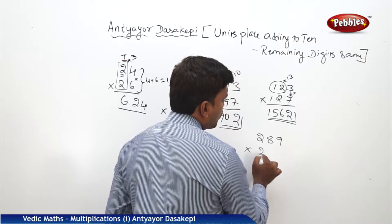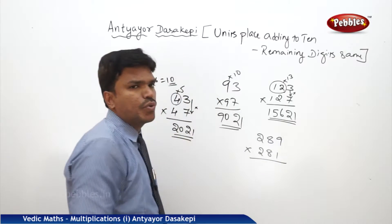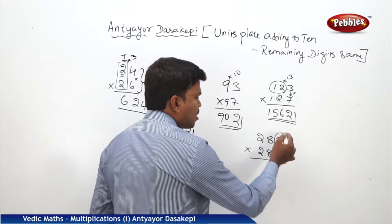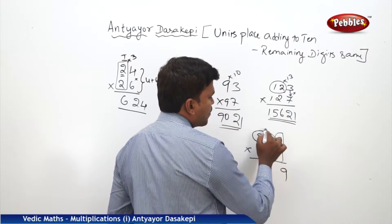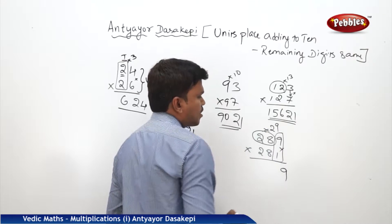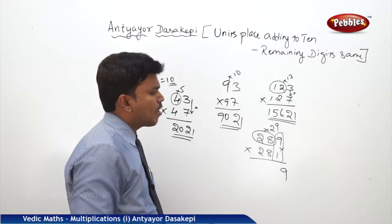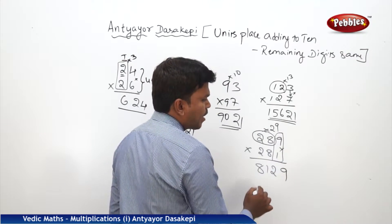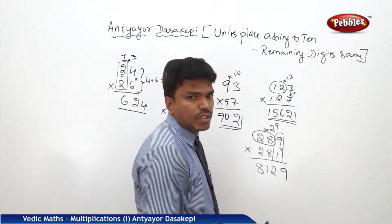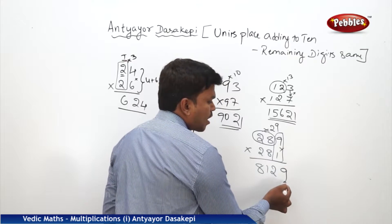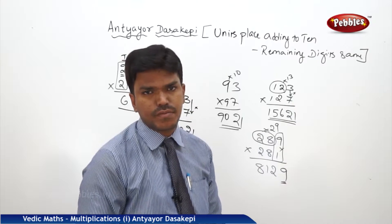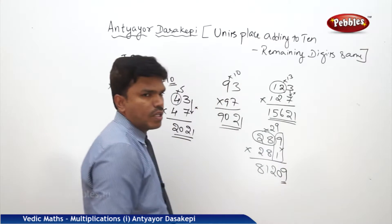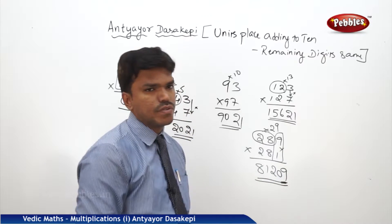Suppose I want to multiply 289 into 281. The rightmost digits 9 and 1 add to 10, and the remaining digits 28 are the same — both conditions apply. What is 9 into 1? It is 9, but remember: the right side part of the answer must consist of at least 2 digits. So write it as 09. Then 28 multiplied with its next number 29: 28 into 29 is 812. So your final answer is 81209.